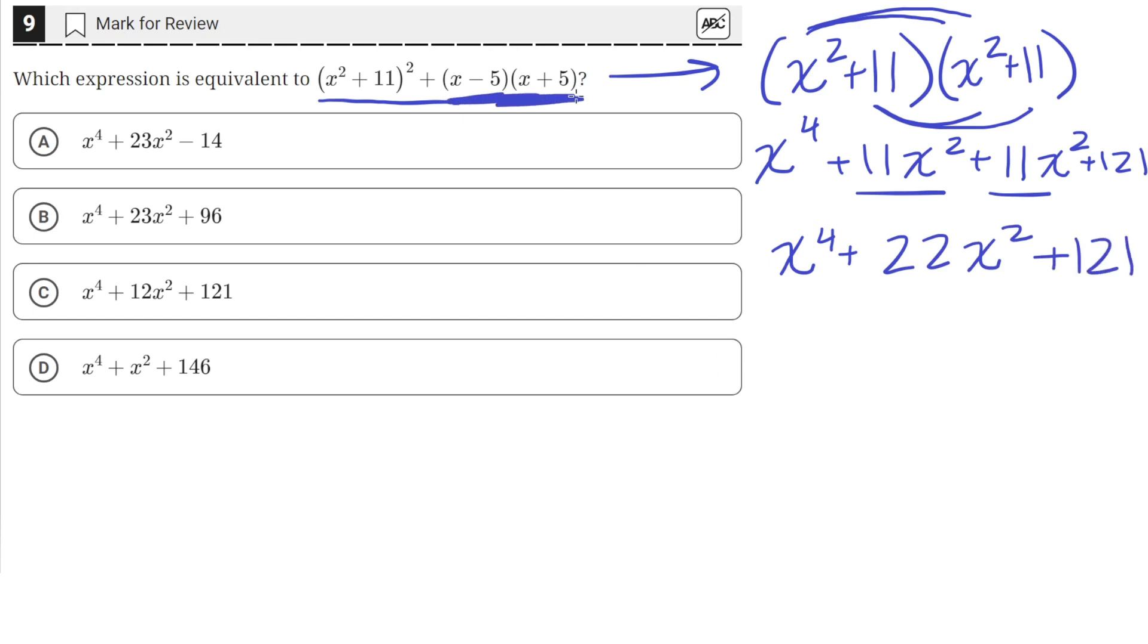Okay, now we can do this multiplication of these two binomials here. So we have x minus 5 times x plus 5.